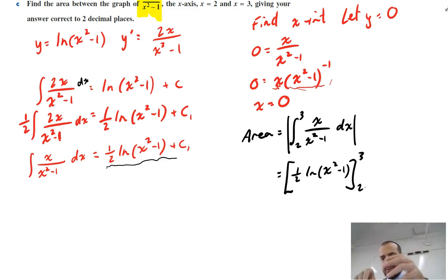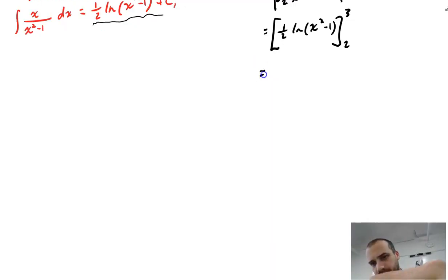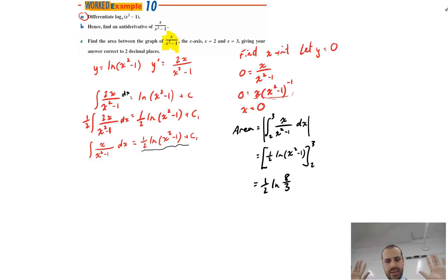Sub 3 into that, subtract the substitution of 2 into that, and that'll give you your answer. You should probably just pause the video and find out if you can do it. The answer will eventually be half ln 8 on 3. And that's the ballgame.